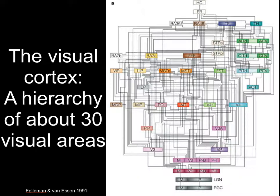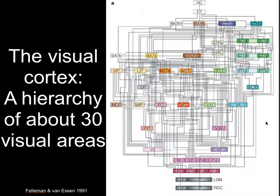The visual cortex, and in particular the ventral pathway, is quite a complex arrangement of areas. Here you can see a diagram by Fellman and Van Essen in 1991 that shows what kind of brain areas and connections there are. You might recognize V1, V2, V4, and parts of IT. This model gives you an anatomical description of the connections, though it doesn't tell you anything about how information is processed or how the brain is organized.